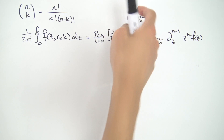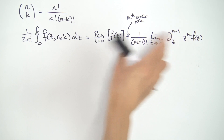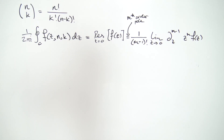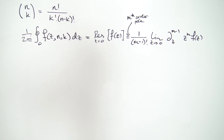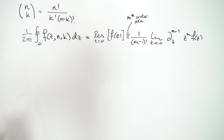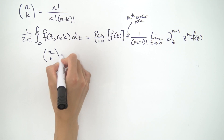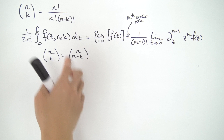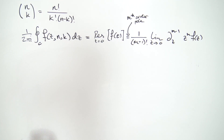We choose an m-th order pole because we don't know what the order could be. Looking at the right-hand side and comparing with n choose k — which is n factorial over k factorial times (n minus k) factorial — we already see some similarities, namely factorial action in the denominator. We could set m minus one equal to k or n minus k. It doesn't matter which one we choose because of the symmetry property: n choose k equals n choose (n minus k). So we'll just choose k.